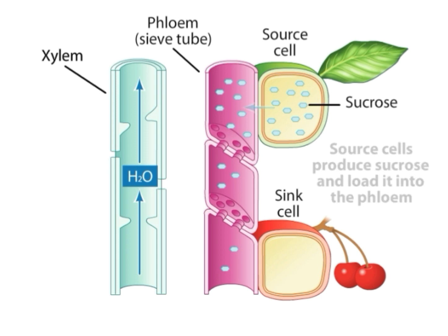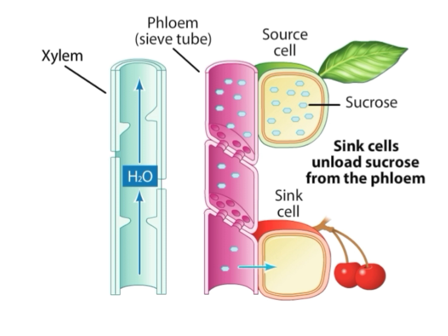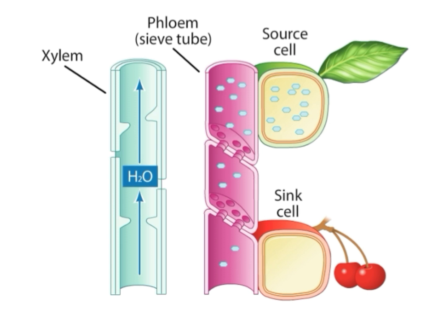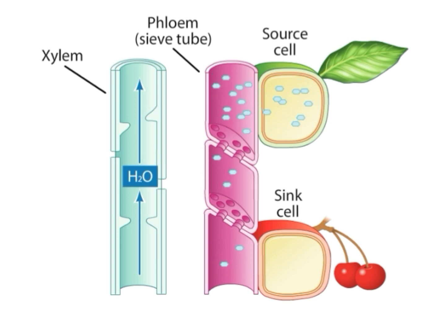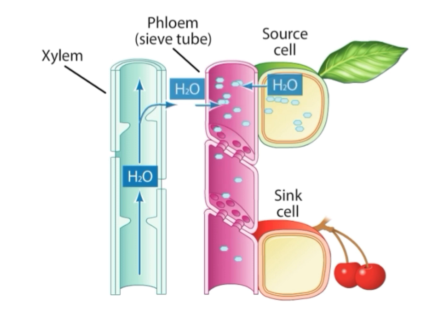The sugars pass through the sieve tubes and are unloaded at the sinks, whether it is a fruit or any storage organ. The sink absorbs the sugars. Here you can see the animated form of this process, showing sugars being generated in the sieve tubes.